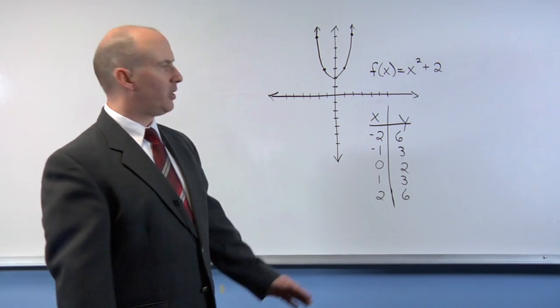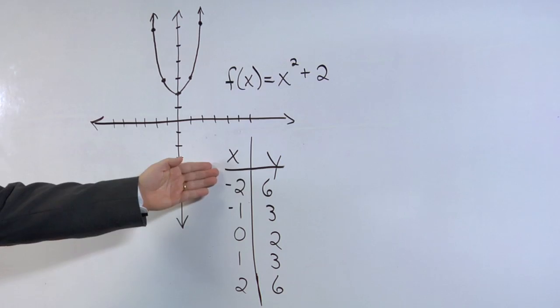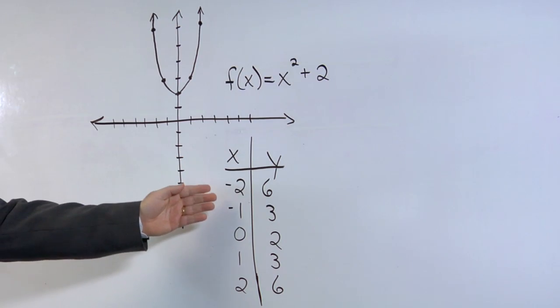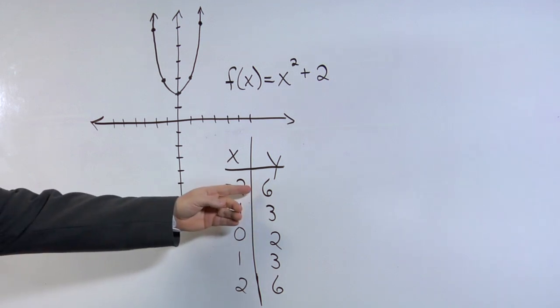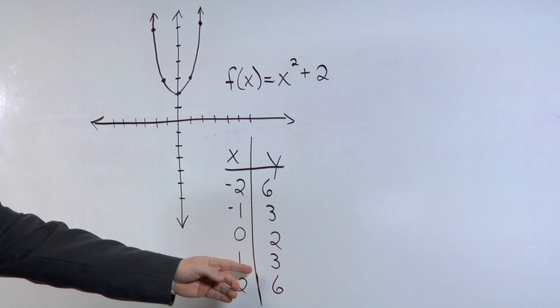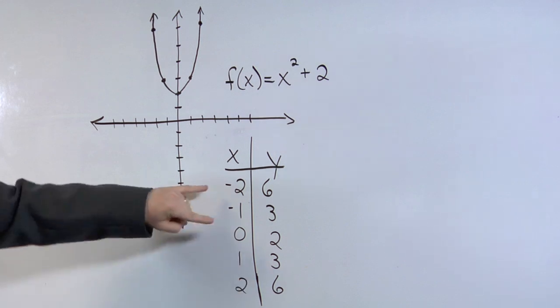In order to graph this function, I first created an xy table. I selected values for the input, which is x, as negative 2 through 2, and the output for y depends upon what the value of x is.